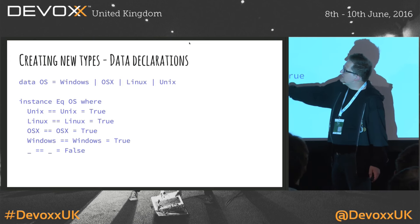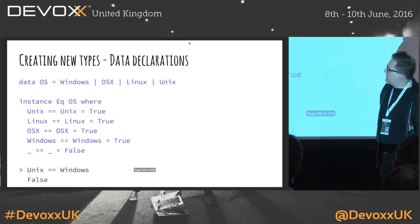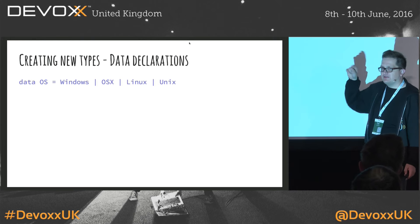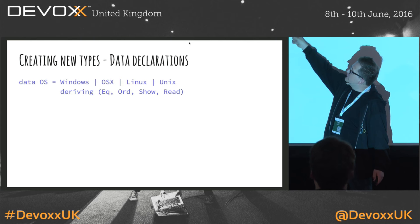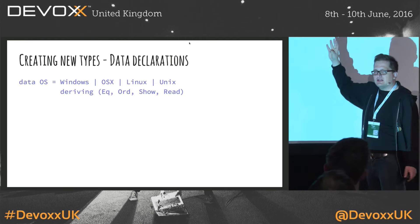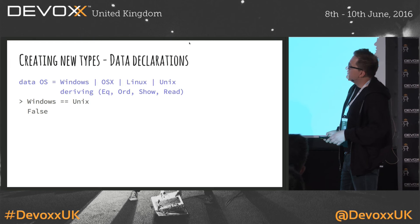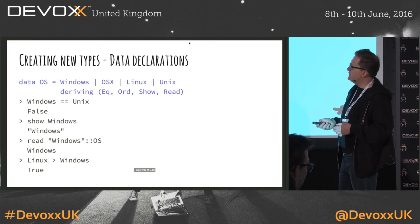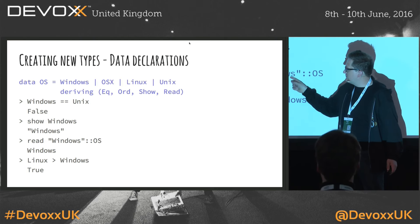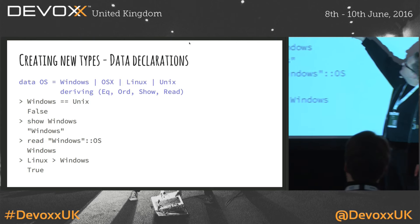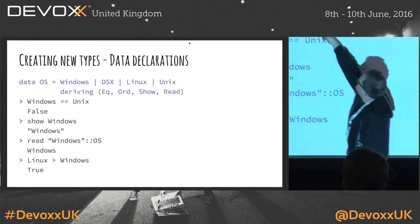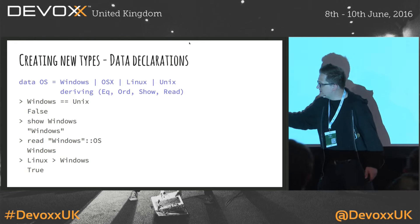We could create an instance for the Eq type class, and for Show, and for any of those type classes. But there's a trick: you can use the keyword 'deriving', and in the type definition say 'create instances for these four type classes defined in the language.' The way it works is it compares just the names of the types — so it will know that Windows is not Unix, it will know how to create a string for Windows, it will read the type from a string. The Ord type class order is taken from the order you define values in that type — so if you move Windows from the beginning to the end, the comparison would return false.